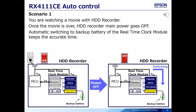Scenario 1: You are watching a movie with an HDD recorder. Once the movie is over, the HDD recorder main power goes off. Automatic switching to the backup battery of the real-time clock module keeps the accurate time.